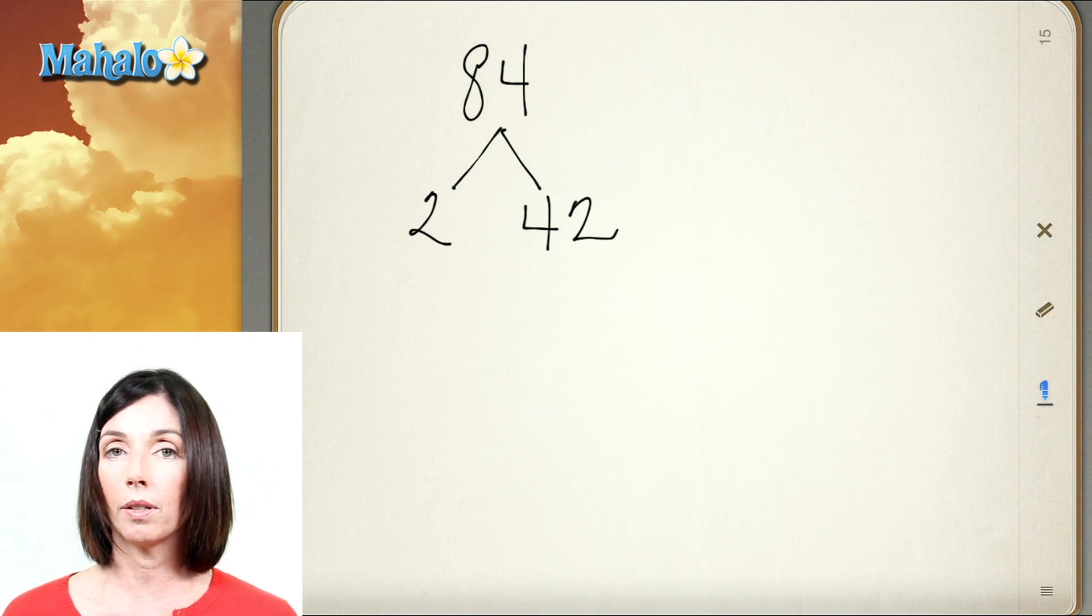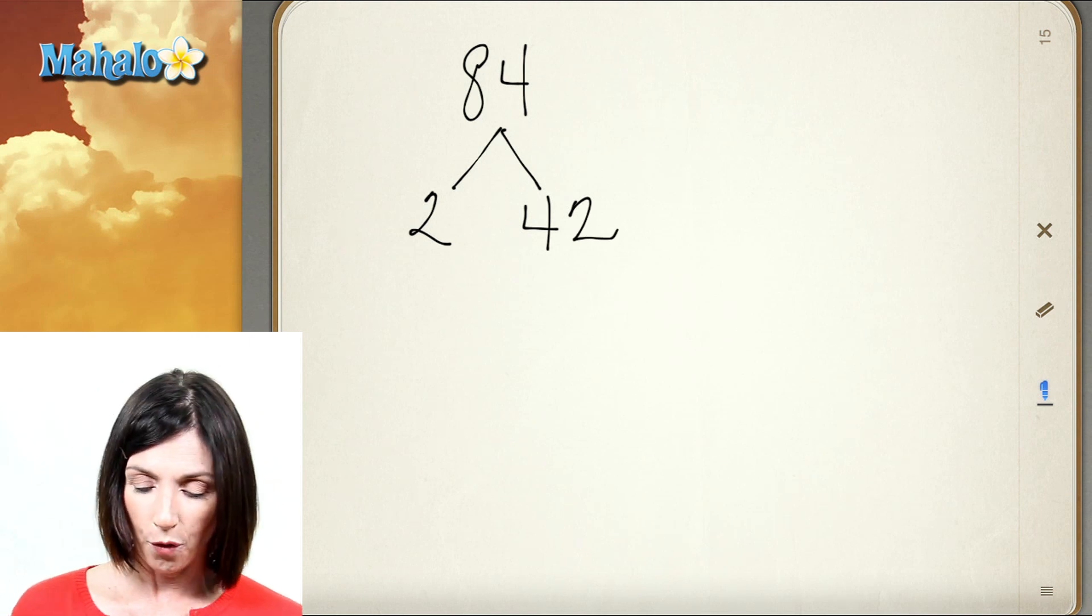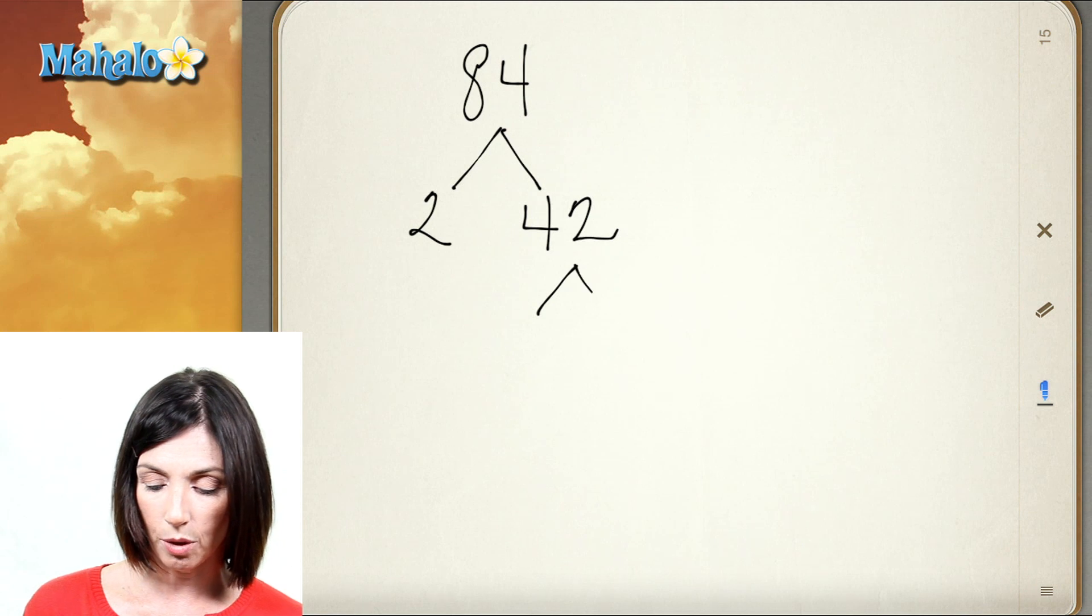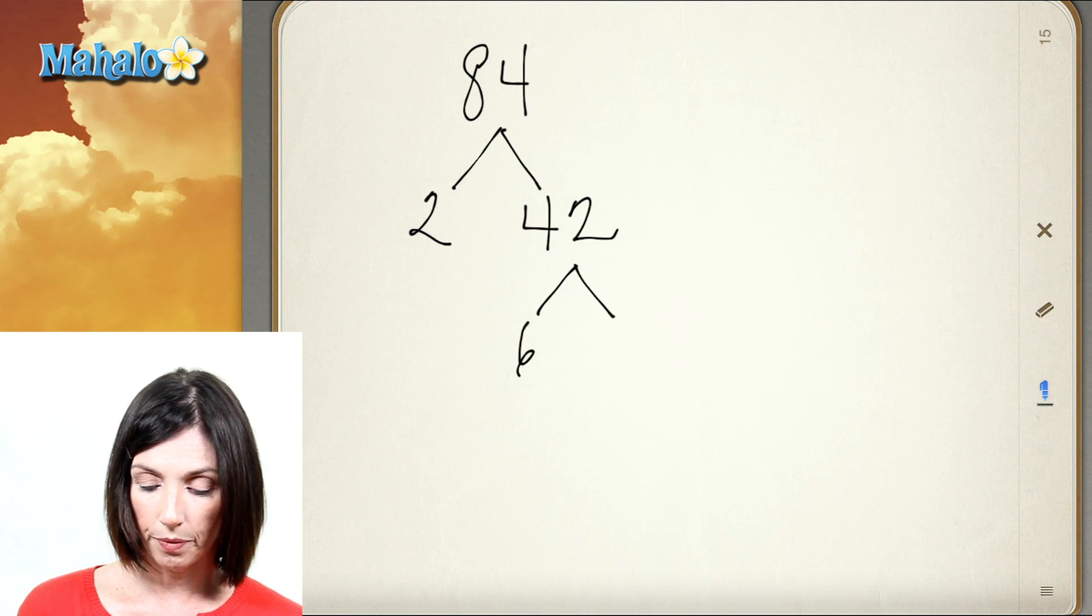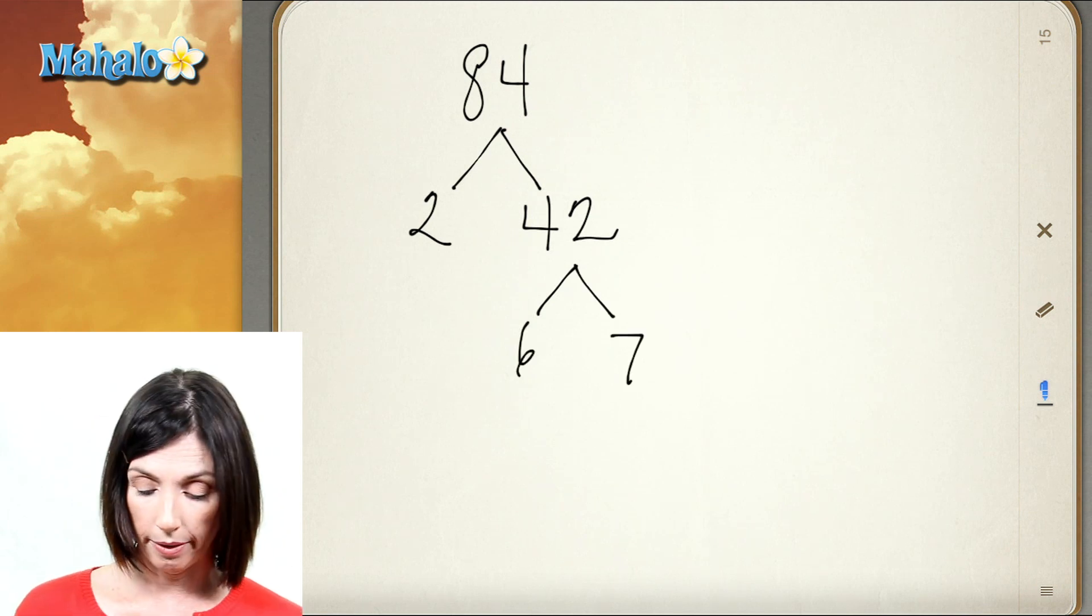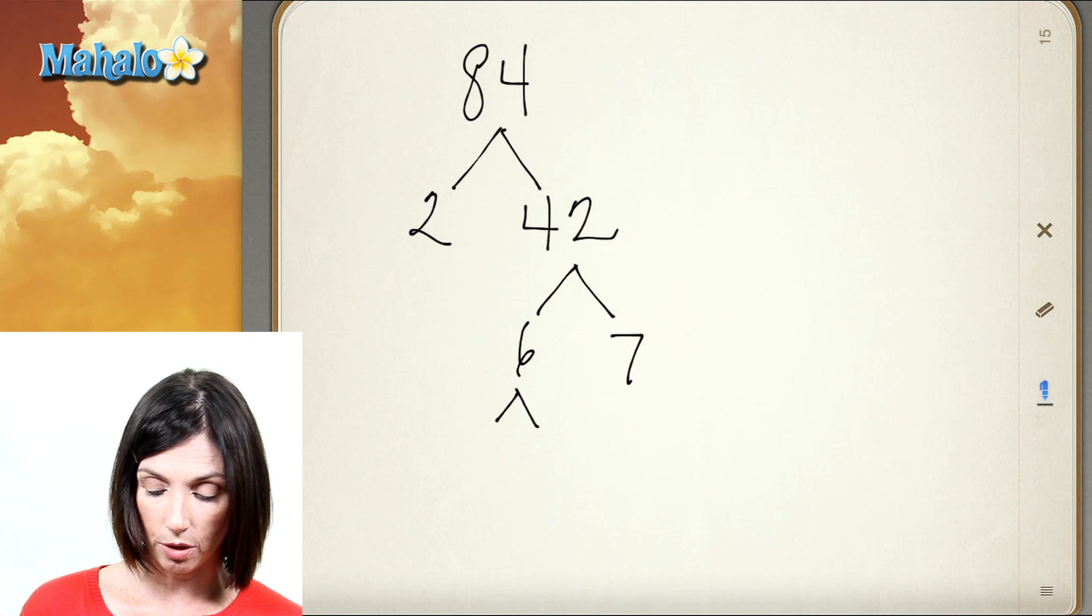2 is a prime number so I'm done on that side. 42, let's see, I know 6 times 7 is 42. 7 is a prime number so I'm done there, and 6, I know that's 2 times 3.